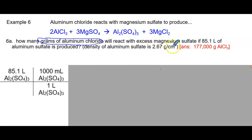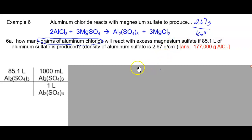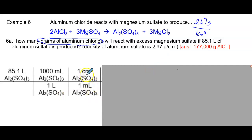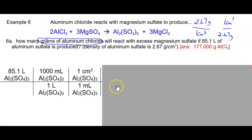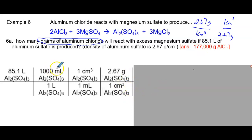Our density is 2.67 grams per centimeter cubed — that's 2.67 grams over 1 centimeter cubed. We've got to get to centimeters cubed, and we know that for every one milliliter there is one centimeter cubed. So one milliliter of aluminum sulfate equals one centimeter cubed of aluminum sulfate. Now we can use the density ratio to flip from volume into mass: 1 centimeter cubed equals 2.67 grams. We put centimeters cubed on the bottom so they cancel, and grams of aluminum sulfate go on top.